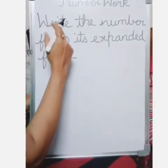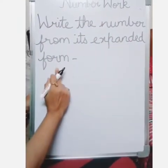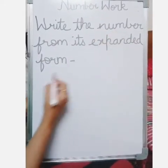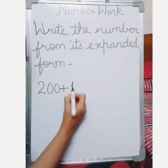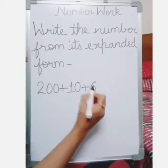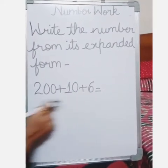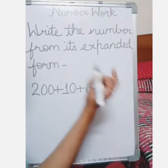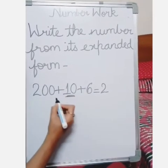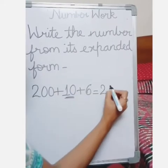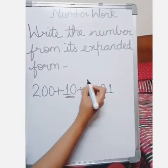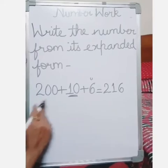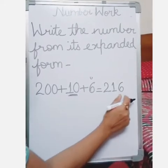Now we are going to see how to write the number from its expanded form. The number is given in expanded form and you have to write the number. Here it is 200 plus 10 plus 6. What is the number in the hundreds? It is 200, so you write just 2. What is the next number? It is 10 — only one 10 — so you write 1. And the units place is 6. So the number is 216. 200 plus 10 plus 6 means it is 216.